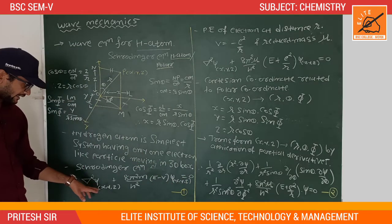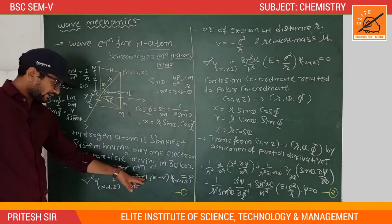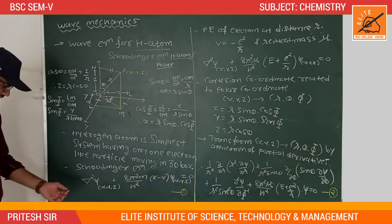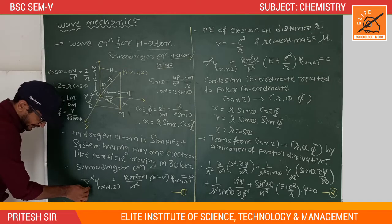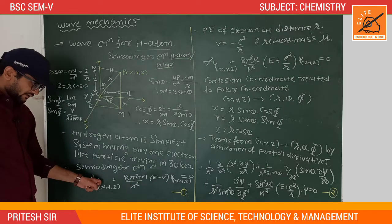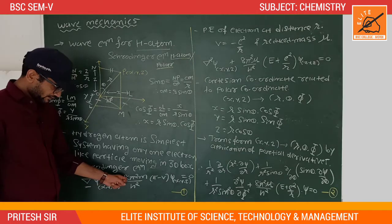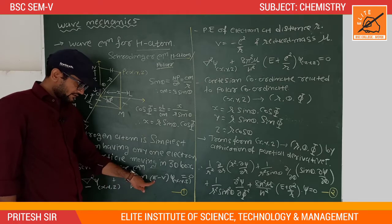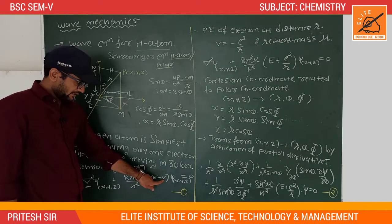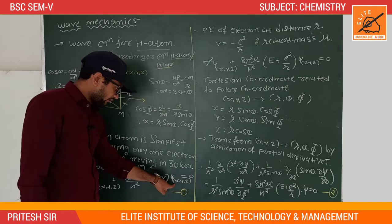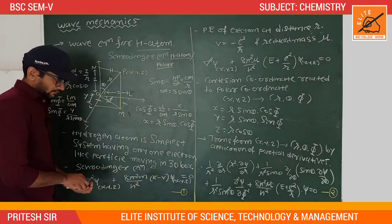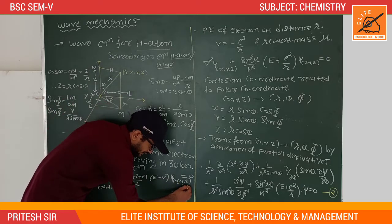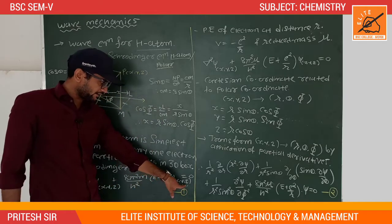The Schrödinger equation is del-squared ψ plus (8π²m / h²)(E − V)ψ = 0. Here del-squared is the Laplacian operator, ψ is the wave function, π is the constant, m is the mass of the particle, h is Planck's constant, capital E means energy, capital V means potential energy.